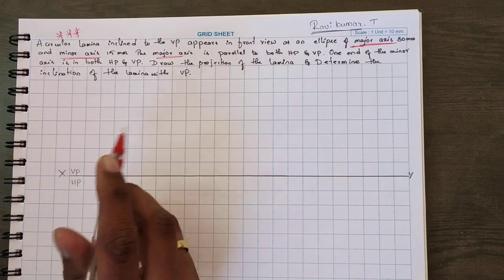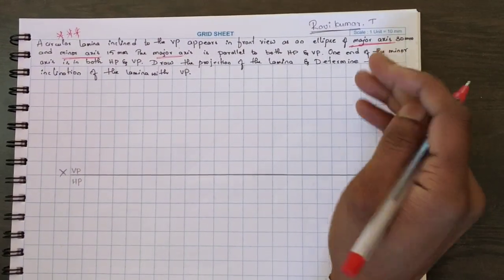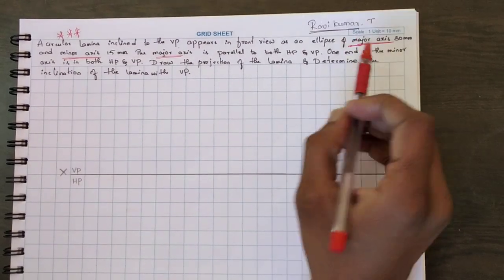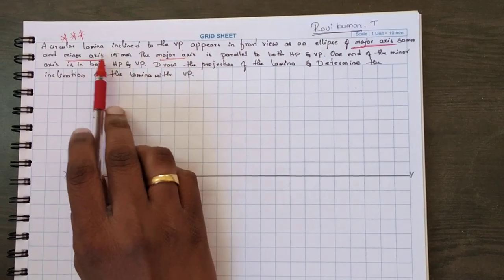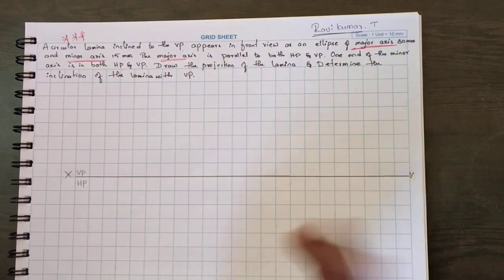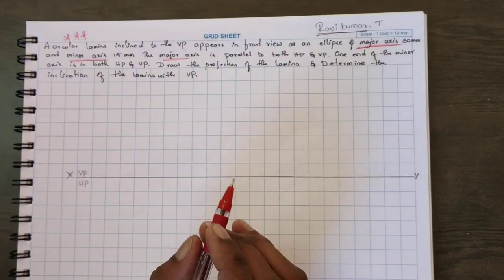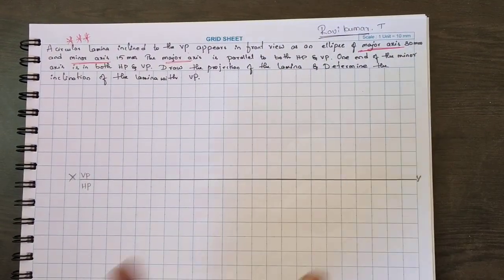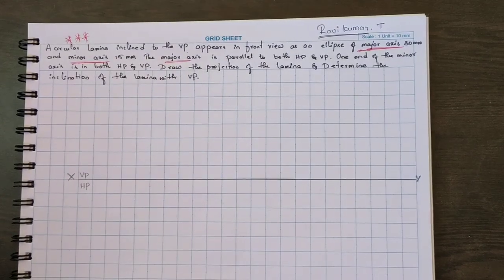Here, where you want to place the lamina — that is very important. They are not given any inclination to HP or VP directly. They simply said that in the front view, the major axis looks like a minor axis of 15mm. The major axis is parallel to both planes, and one end of the minor axis is in both HP and VP. If you want to make it parallel to both HP and VP, you have to rotate and place it. But before that, how to place the first position — that is a very important thing.